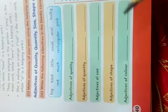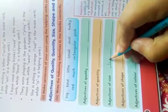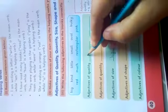The first one is big. Which one is it? It's a size, adjective of size, so we will write here big. The second one is kind, and kind is an adjective of quality, so we will write here kind.